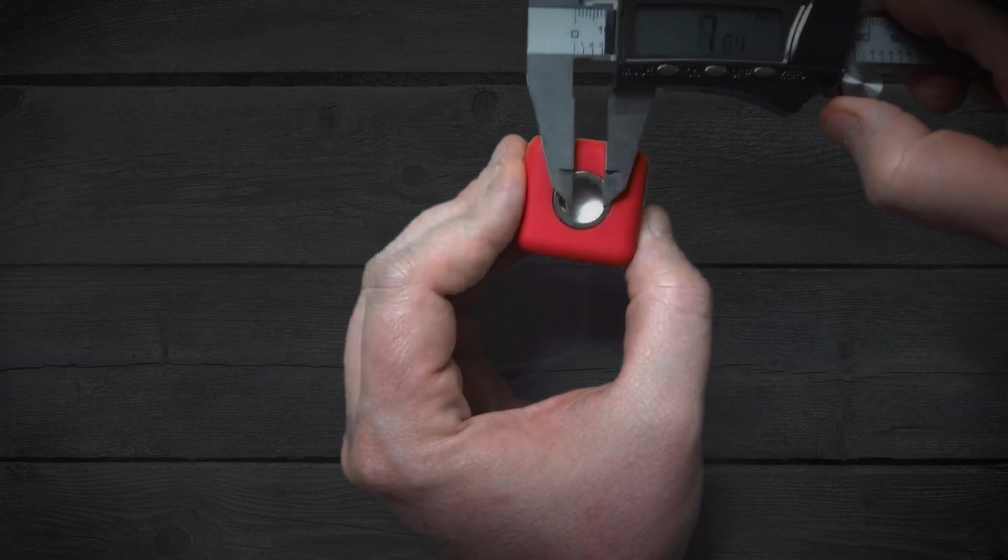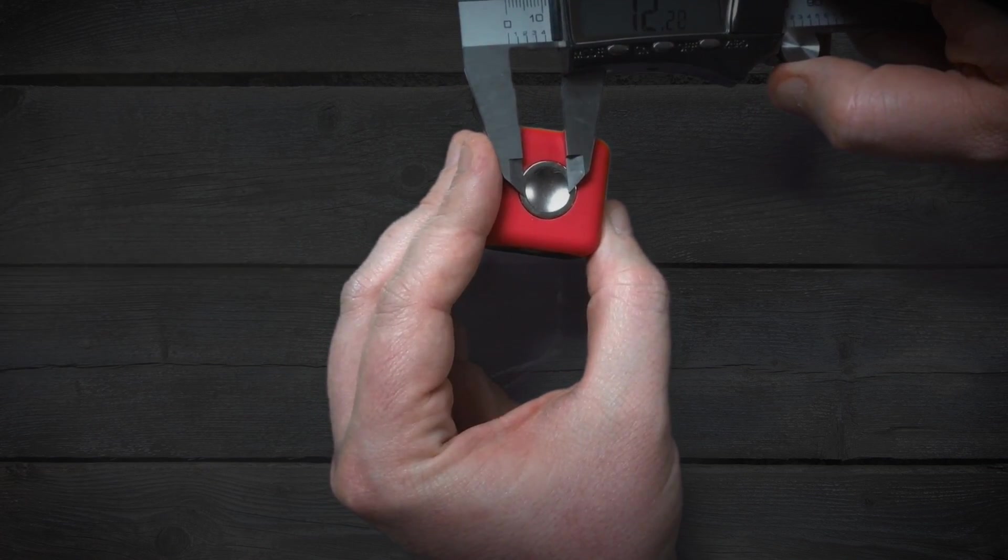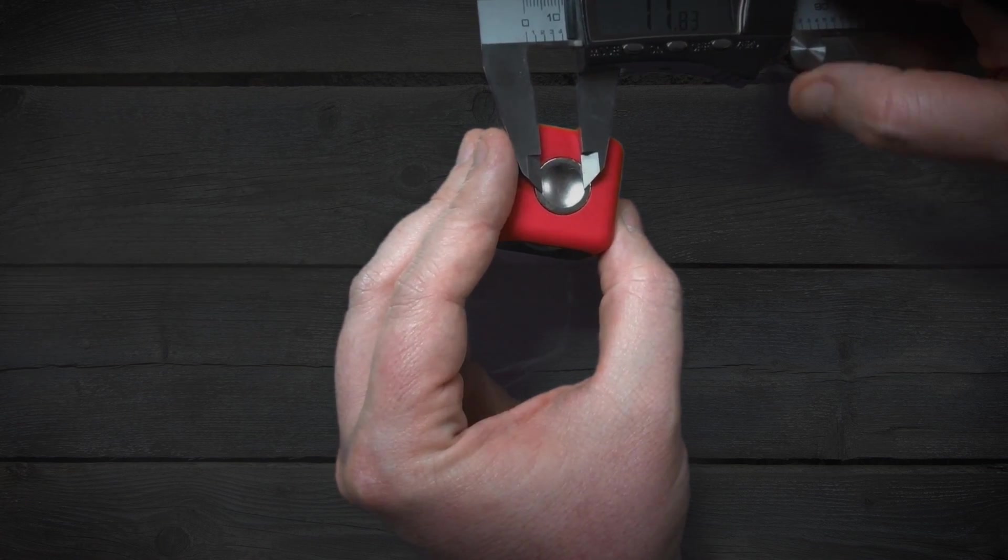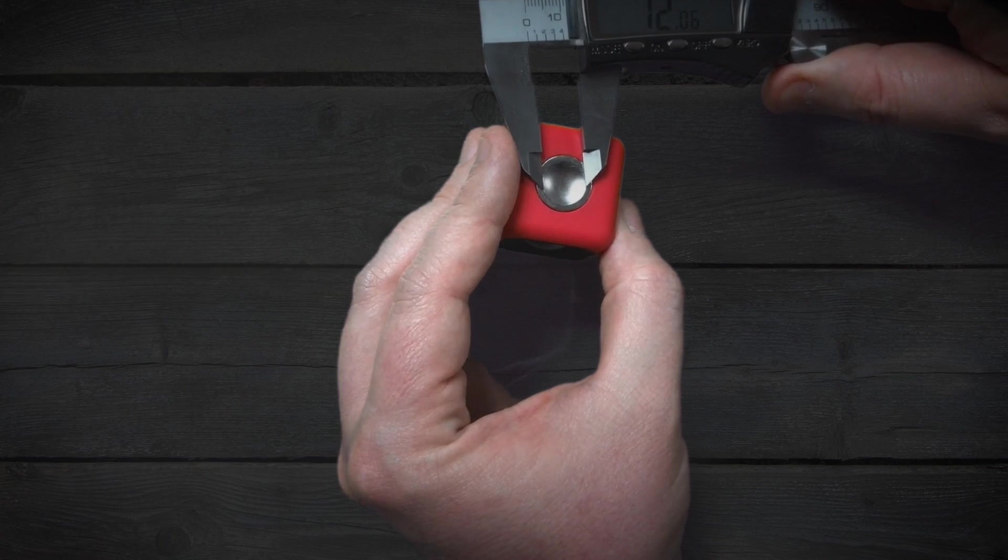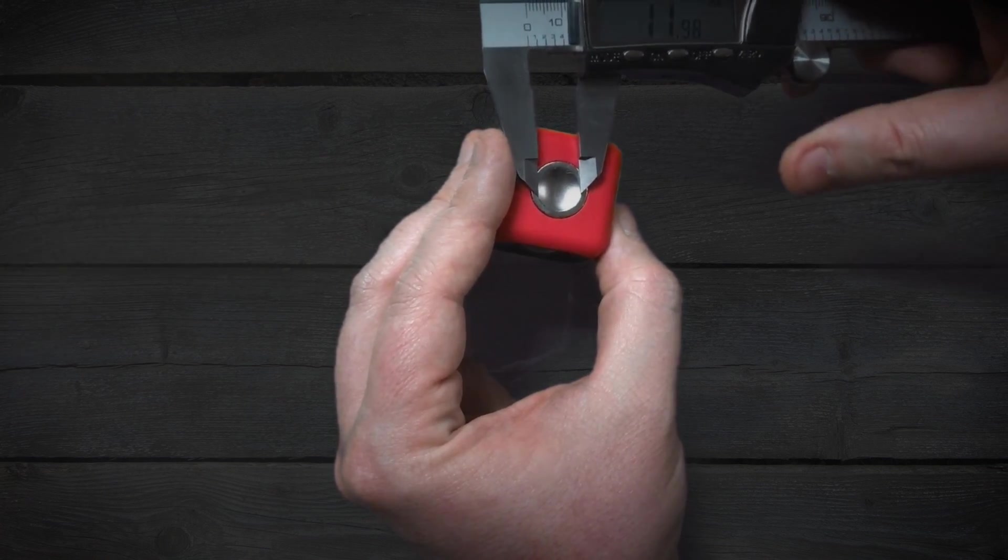So to start with, we're going to need a couple of pieces of information. We're going to need to know the width of our arc, which appears to be right around 12mm, or close enough to 12mm.